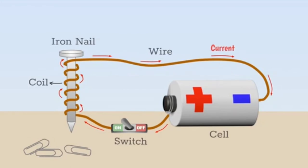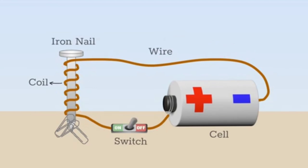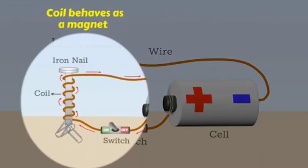Now turn the switch on so that the current flows. As soon as the switch is turned on, the iron nail attracts the pins. As a result, the pins are attracted to the iron nail. When we turn off the switch, the current stops and the pins are no longer attracted to the iron nail.